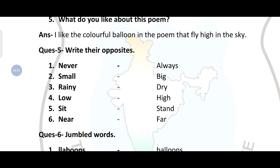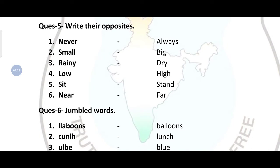Now question number five. Write their opposites. Never, always, small, big, rainy, dry or sunny you can write. Low, high, sit, stand, near, far.